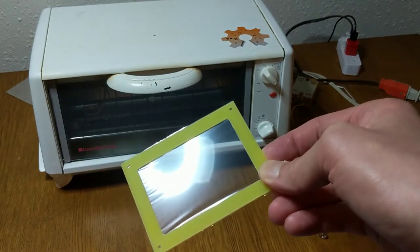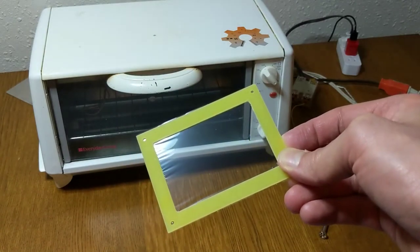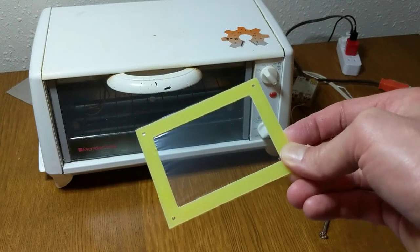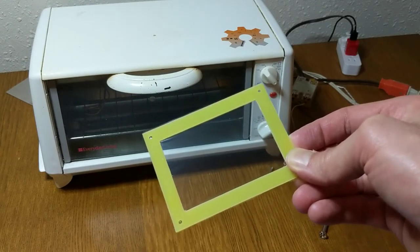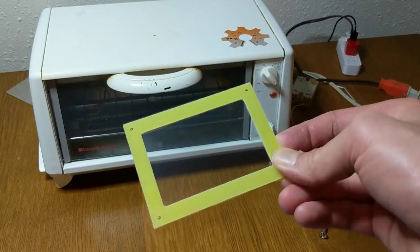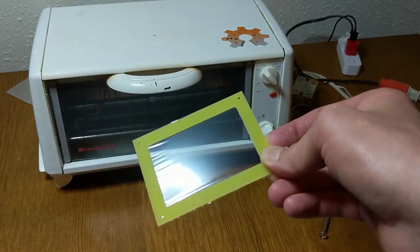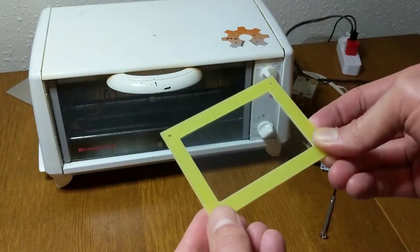You can see this mylar has a few ripples in it, it's not quite perfect. We're gonna put it in the oven here and when it comes out it should be looking much better. The oven is preheated to 120 C and we're gonna put it in for about five minutes.